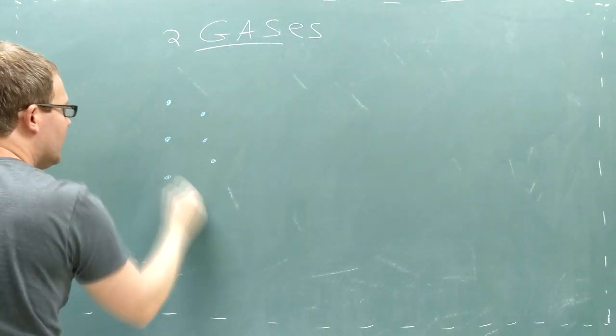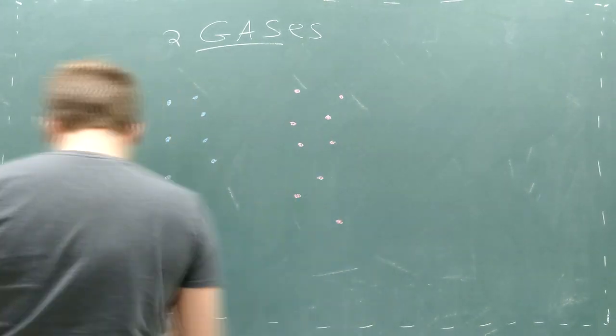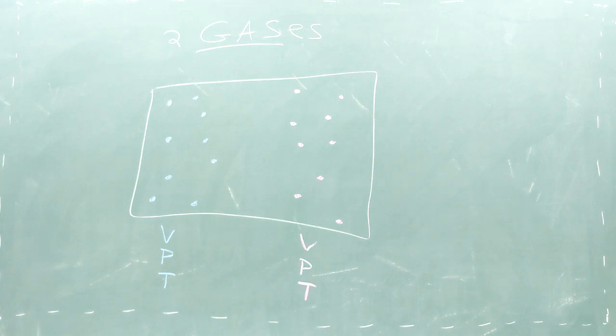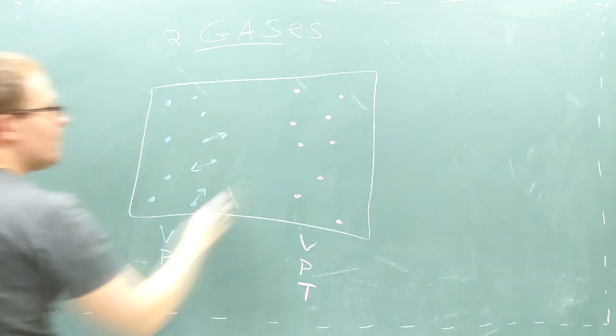You can think of each gas as having its own volume, pressure, and temperature based on the red particles and the blue particles separately. Let's suppose that the two gases start on separate sides of the box, and that the red gas starts at a higher temperature than the blue gas.